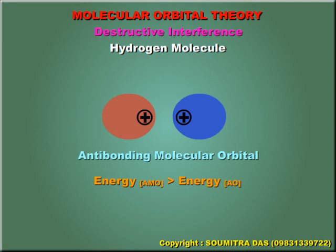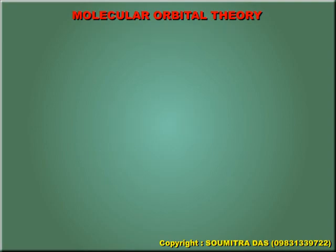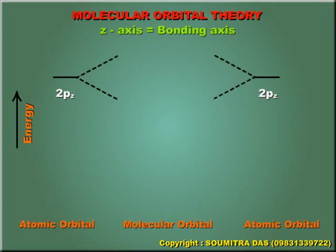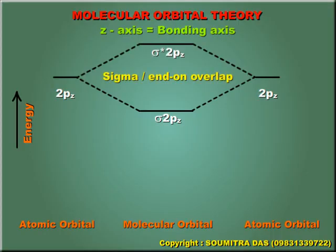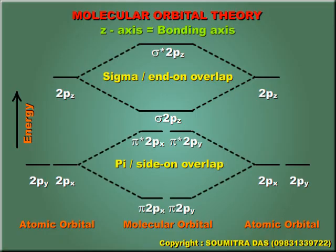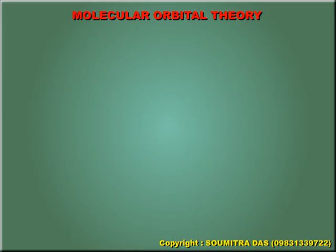Remember that SS overlap is always sigma overlap. Now, if we arbitrarily choose Z axis as the axis of bond formation, then two 2PZ undergo sigma or end-on overlap and the 2PX and 2PY orbitals undergo pi or side-on overlap. In the following animation, we will see the formation of PP sigma overlap and PP pi overlap.